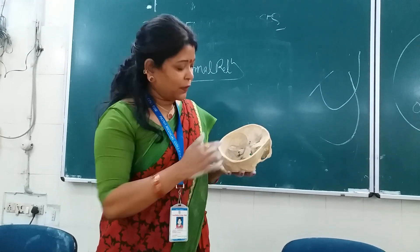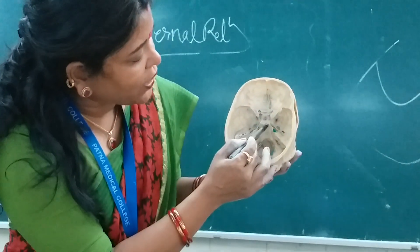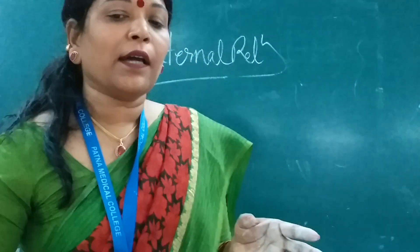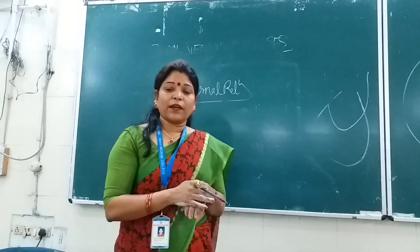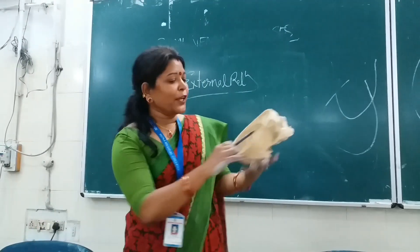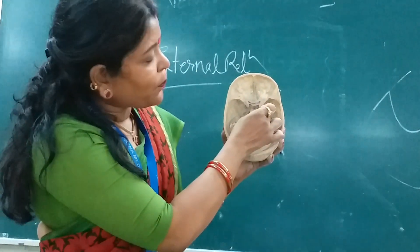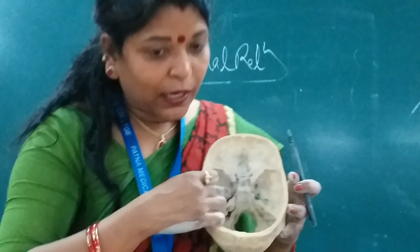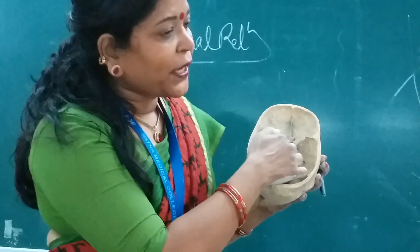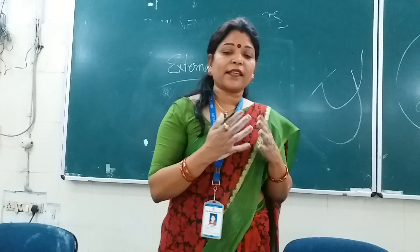The third and fourth cranial nerves are also in the superior relations, related to the anterior clinoid process and posterior clinoid process. The medial most part of the temporal lobe in the middle cranial fossa is the uncus, which is present here. Between the uncus and the optic chiasma there is a very important paired structure in the superior relation of the cavernous sinus.